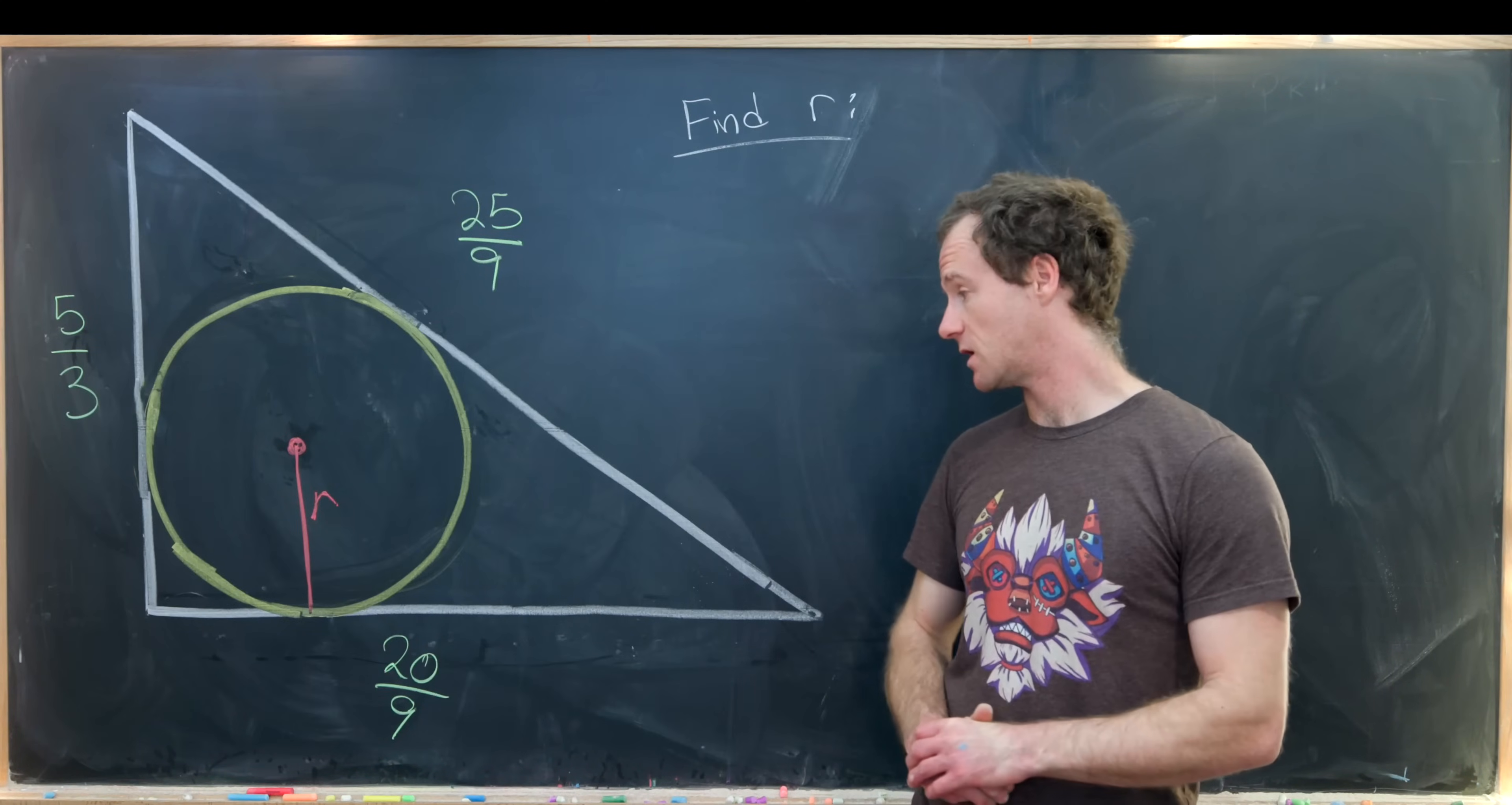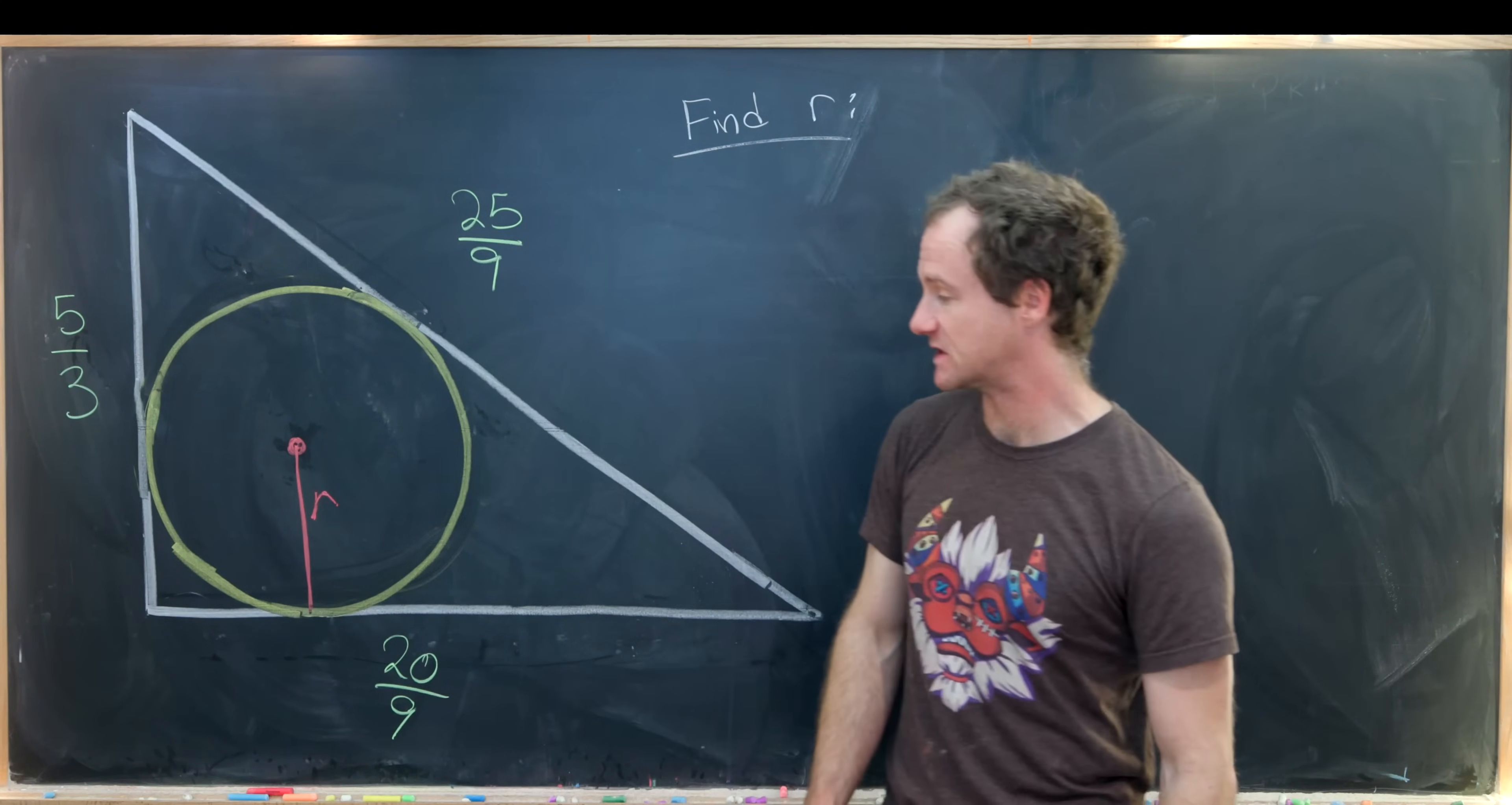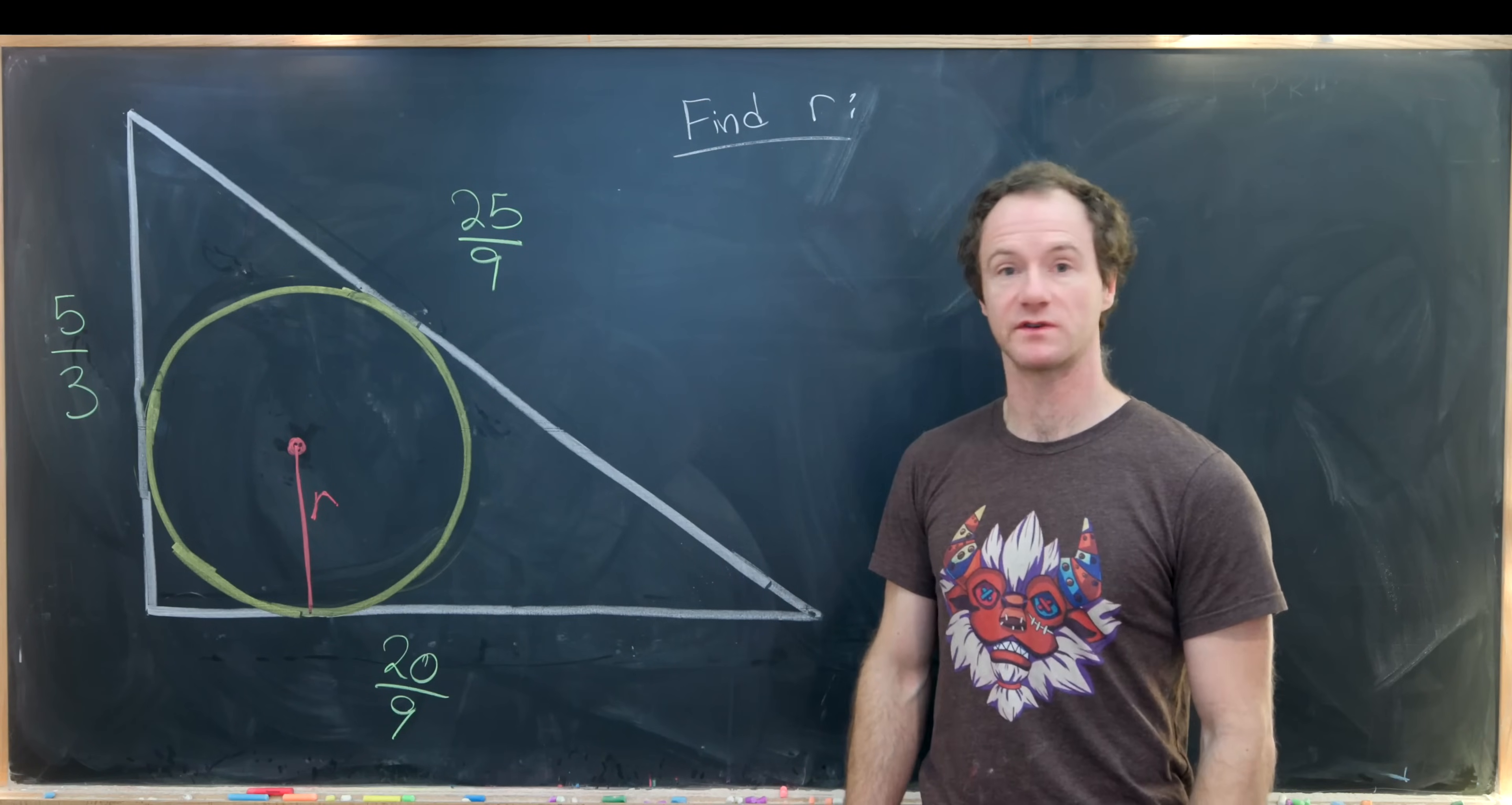We've zoomed in on our smaller triangle, which just to reiterate, has side length 20 over 9, 5 over 3, and 25 over 9. It's a right triangle. And now our goal to finish this off is to find the radius of the inscribed circle. We'll do this by introducing a couple more circles into this situation and then using a fairly well-known result.